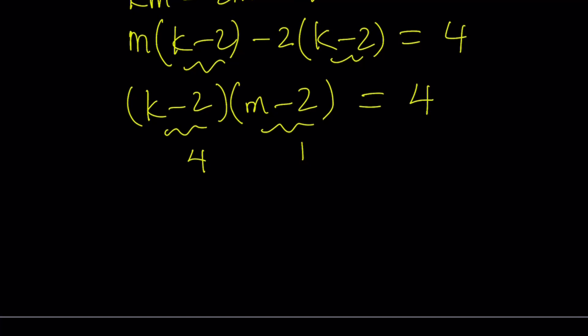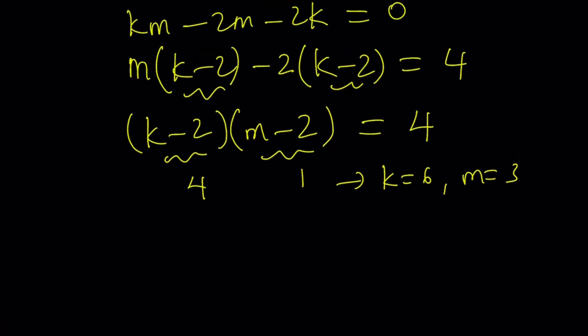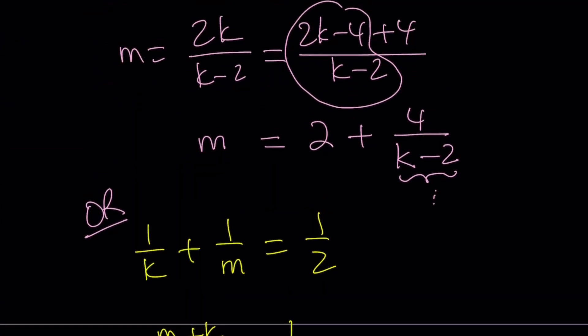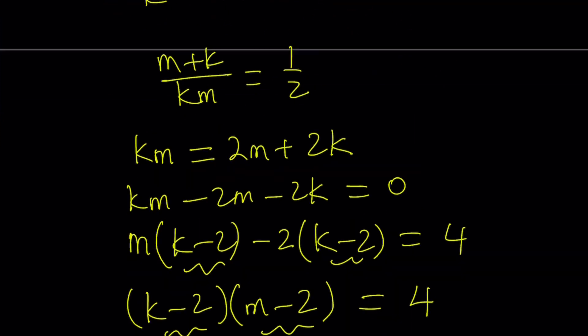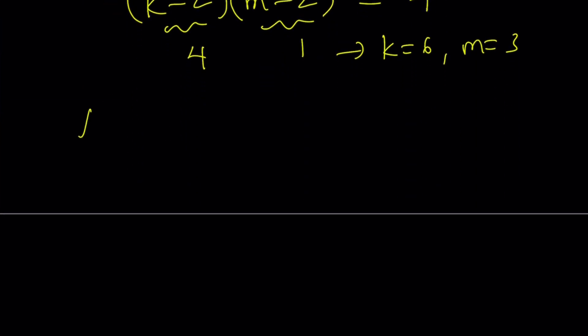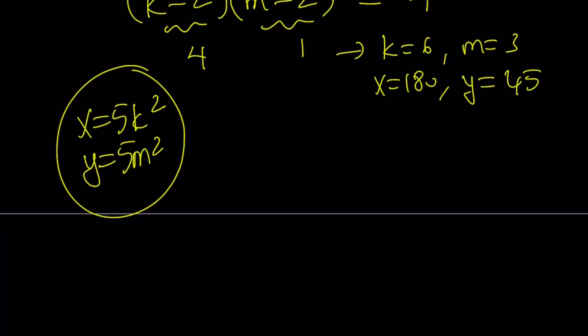So 4, 1 is a possibility and this gives us k equals 6 and m equals 3. But let's go back to x and y. Remember we were able to write x and y like this. x is 5k squared and y is 5m squared. So let me copy that here. So x equals 5k squared and y equals 5m squared. That's what I'm going to use to evaluate the values. So if k is equal to 6, 6 squared is 36, 5 times that. So x gives me 180 and y becomes 45. So that is a solution. Of course we're going to flip that too.